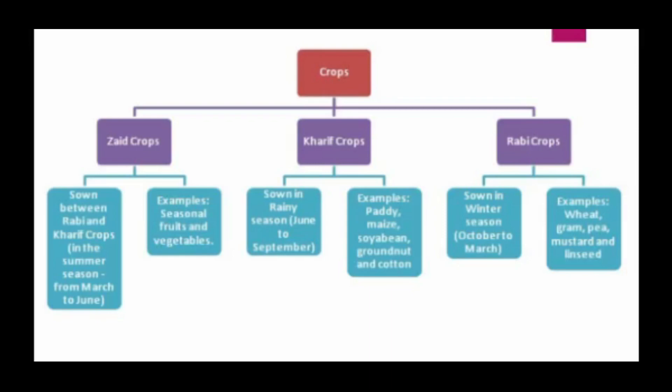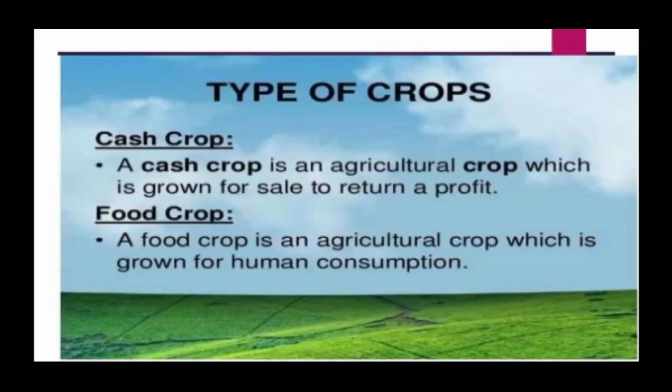Let's do a recap. Crops are categorized into three types according to seasons: Rabi crops, Kharif crops, and Zaid crops. There are four types of crops in India: food crops, cash crops, plantation crops, and horticulture crops. A cash crop is an agricultural crop which is grown for sale to retain a profit.